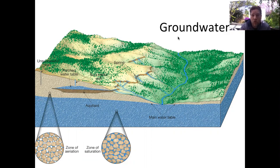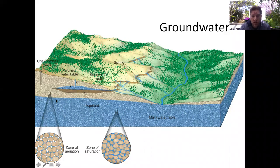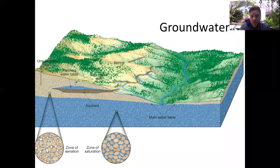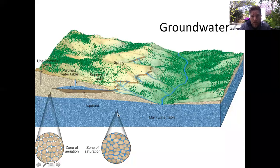Groundwater is any water that fills up the pore spaces beneath the surface. Here in Southern California we have lots of underground sand and gravel, and those little openings get filled with water. When they are filled with water, it's considered the zone of saturation. When those openings are filled with air, it's considered the zone of aeration.